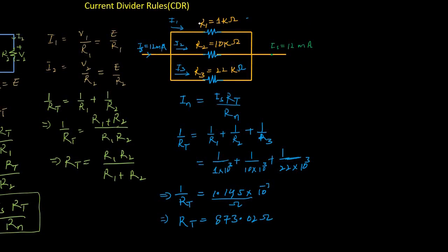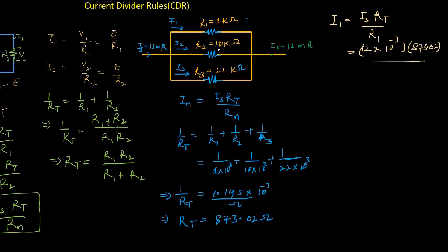To find the current through the first resistor using the current divider formula: I1 equals Is times Rt divided by R1. With Is equal to 12 mA, Rt equal to 873.02 Ω, and R1 equal to 1 kΩ, the current through the first resistor is equal to 10.47 mA.